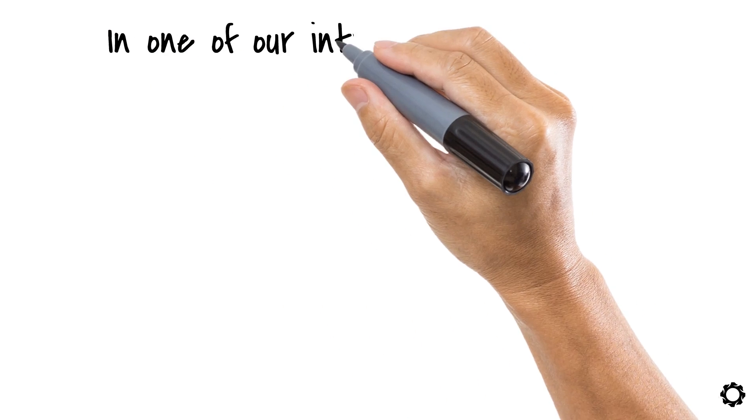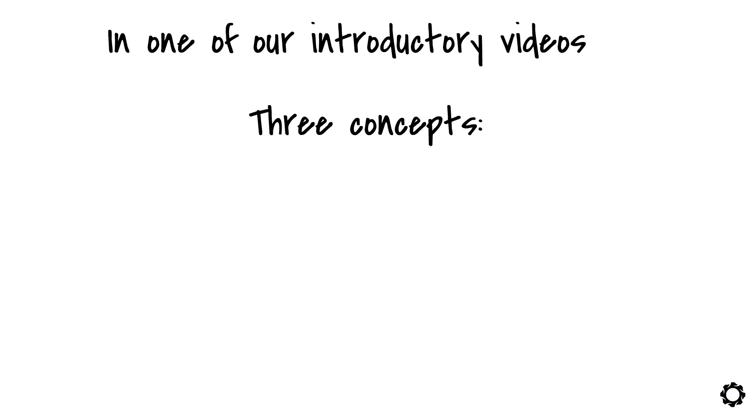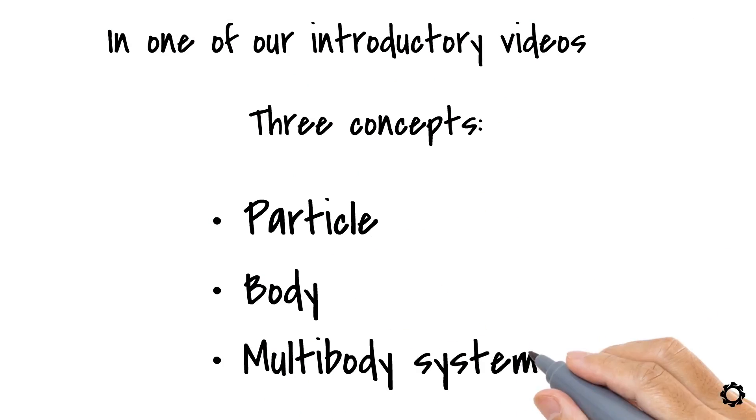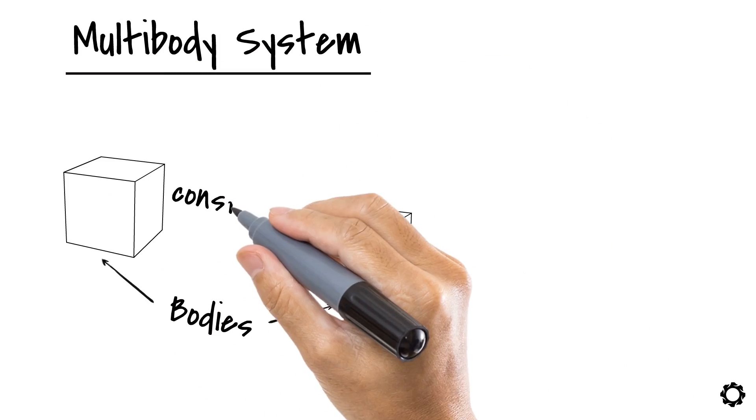Let's recap. In one of our introductory videos, we talked about three concepts: particle, body, and multibody system. The latter is where we are going to focus. We mentioned that a multibody system could be defined as a collection of bodies joined together with constraints.